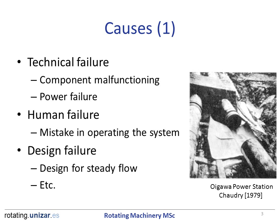The causes of water hammer can be classified according to the type of failure. We can find technical failures, human failures, and design failures. Technical failures can appear because of component malfunctioning or power failure. The typical human failure consists of a mistake in operating the system. Inside design failures, we can find that the piping system was designed for a steady flow.